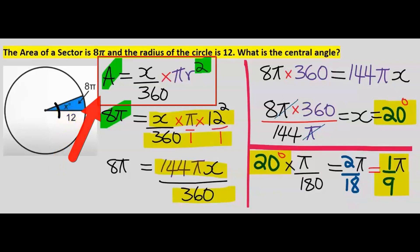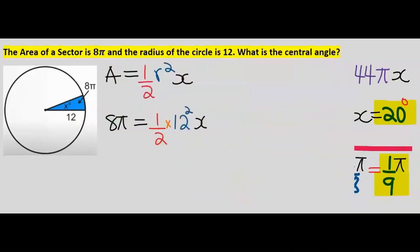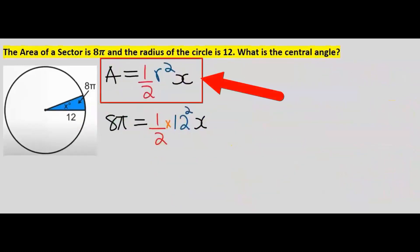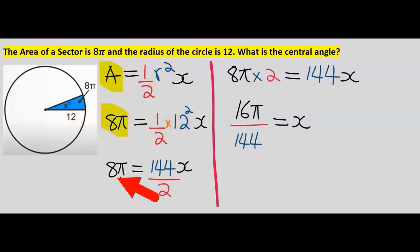This is the degrees formula. Let's repeat this question using the radians formula. Using the radians formula, the area is 8π from the question and the radius is 12. Next, 2 will cross multiply to multiply 8π. 8π multiplied by 2 will give you 16π.